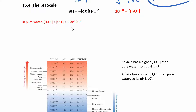Now we can look at the pH scale. pH is a measure of how acidic or basic your solution is going to be, and it's based off of the hydronium concentration. So if you know what the hydronium ion concentration is, you can figure out what the pH is. And if you know the pH, you can figure out the hydronium concentration.